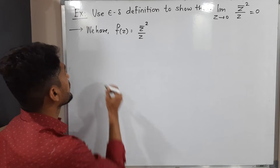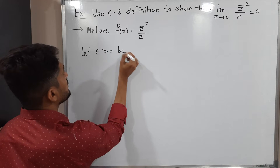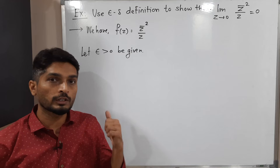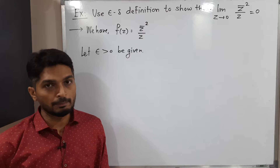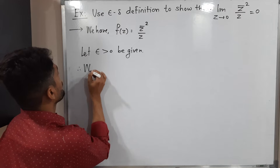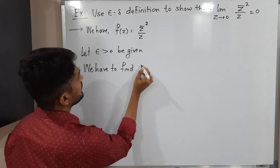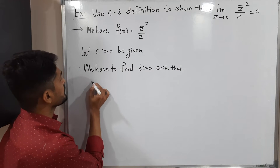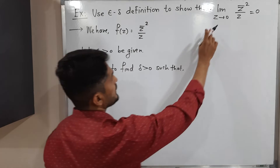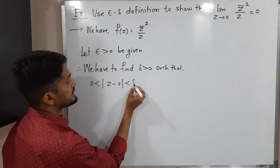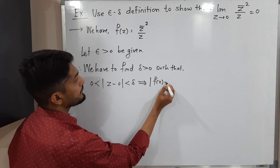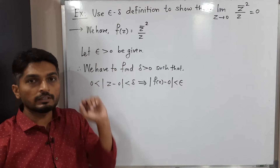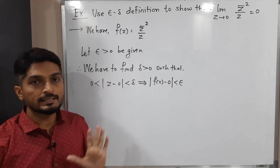So we have to prove this using the epsilon-delta definition. Let epsilon greater than 0 be given. By the epsilon-delta definition of limit, we have to find delta greater than 0 such that 0 less than |z - 0| less than delta implies |f(z) - 0| less than epsilon, where the limiting value is 0.